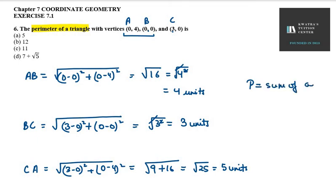Add them all together. Whatever your answer is, will be the option for you. So, 4 plus 3 plus 5. So, 4 plus 3 plus 5 is 12. 12 units is the right option here. That is option B.